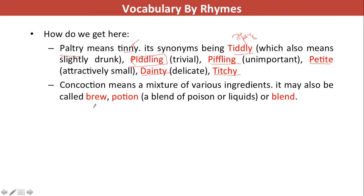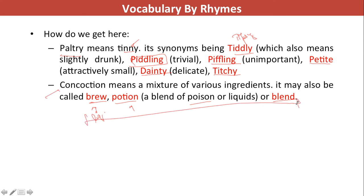Concoction is a mixture of various ingredients — you mix many things together to form a concoction. It may also be called brewing, but brewing is usually used with liquids — when you mix and distil liquids together. Potion is again a blend, usually used with poison but also for alcohols or hard drinks. Blend means to mix together. Concoction is usually for solids, whereas brewing, potion, and blend are usually used for liquids.